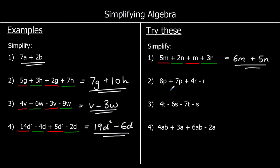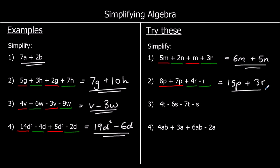Question 2: we've got p terms and r terms. 8p plus 7p is 15p, and 4r take away 1r is 3r.